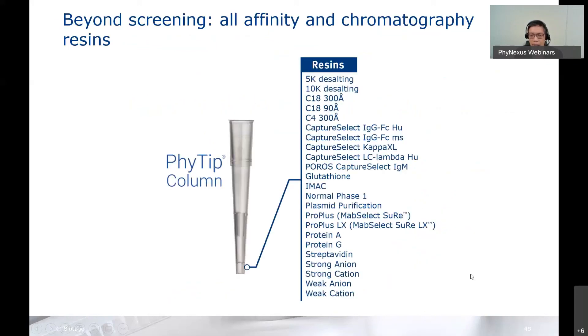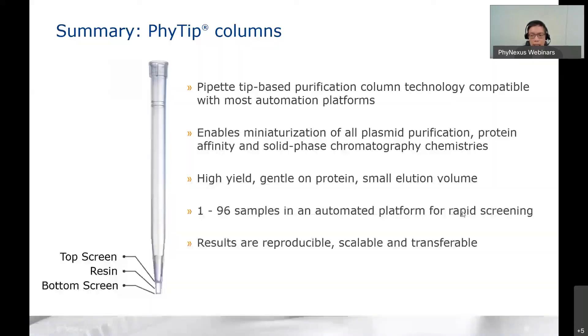I wanted to end here just to show that PhyTip columns are used for a lot of different purifications—the 5K, 10K desalting, reverse phase desalting, and a lot of affinity purification. I'm just going to go right through to the end. I'll pause here and open up the floor for any questions. Okay, take care. Bye, everybody.